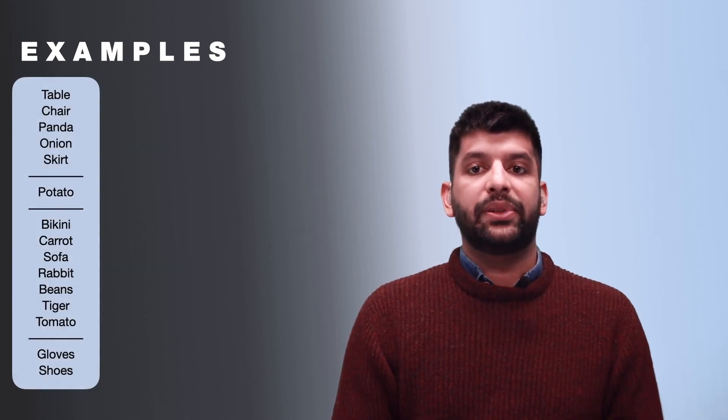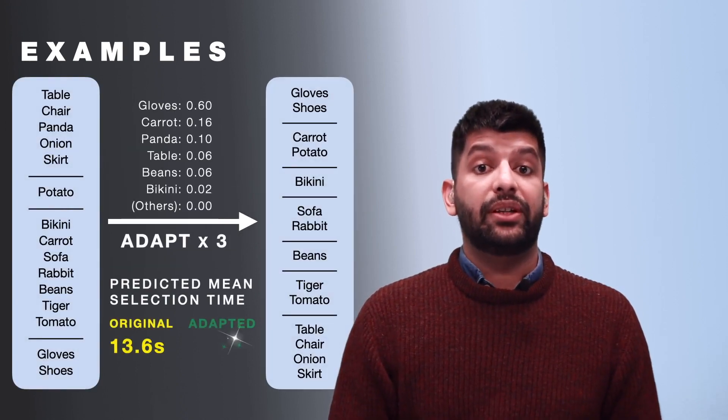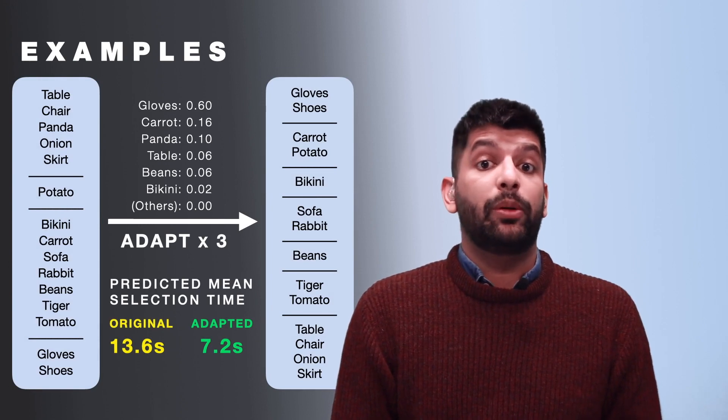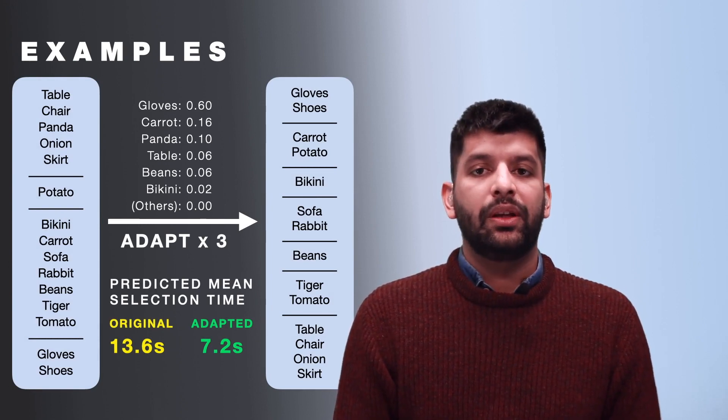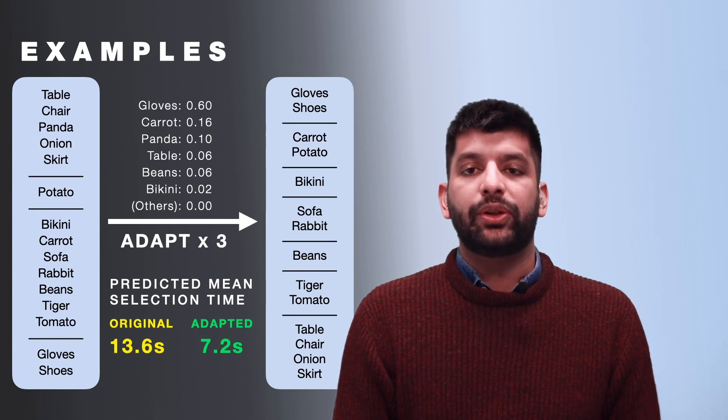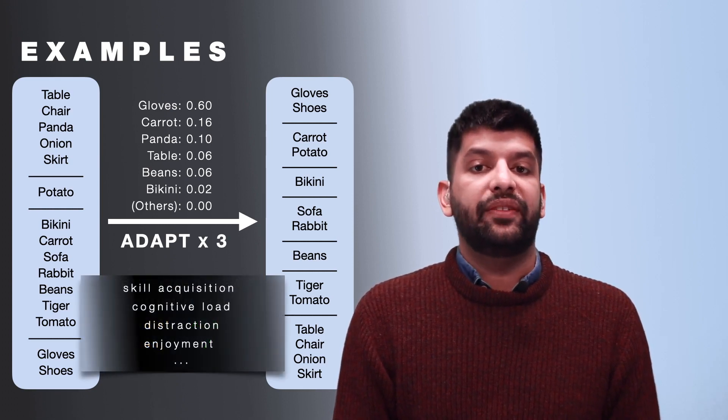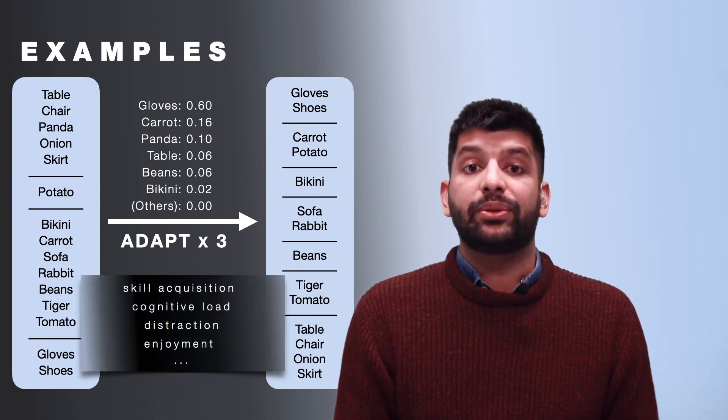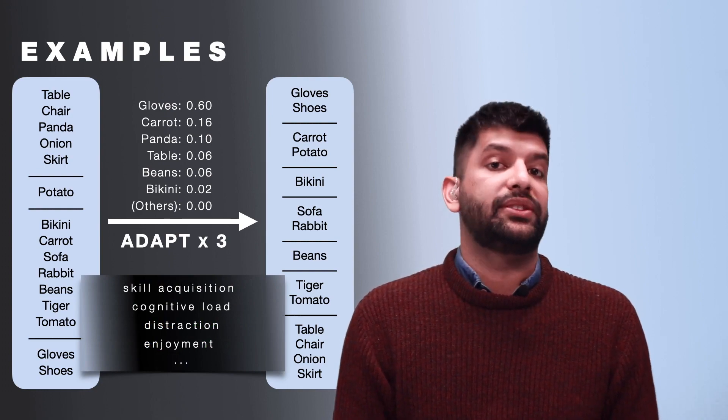As a second example, here we see the results after three rounds of adaptations in a more complicated 15 item menu. While reducing selection time is important for menus, other usability factors such as facilitating skill acquisition or increasing enjoyment could be addressed too.